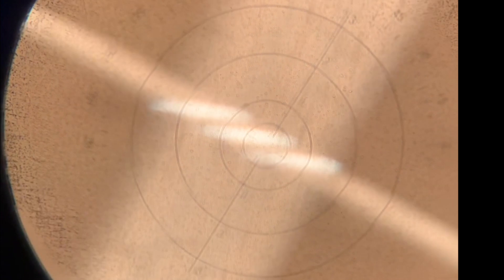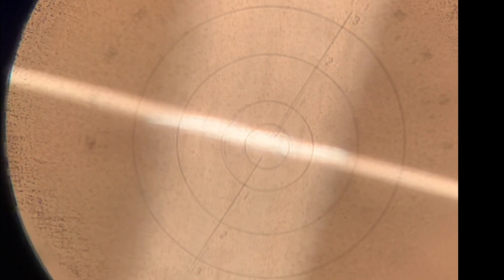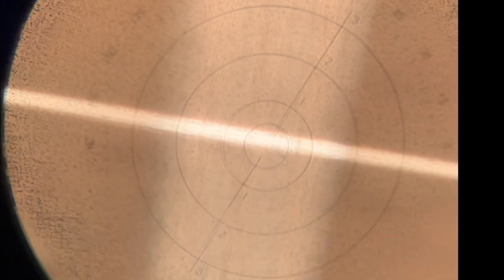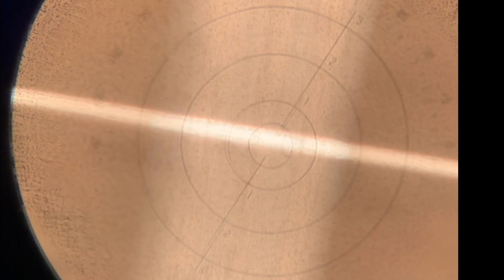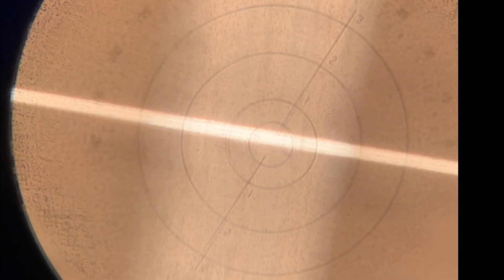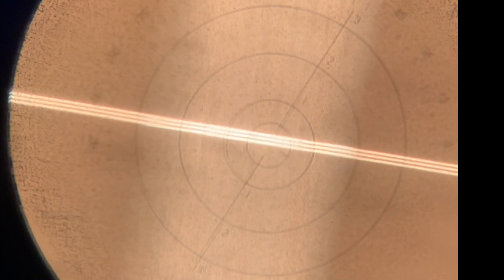First, we want to rotate our axis wheel so that we are grossly aligned with our axis. Then we'll turn our power wheel to get our sphere lines into focus.